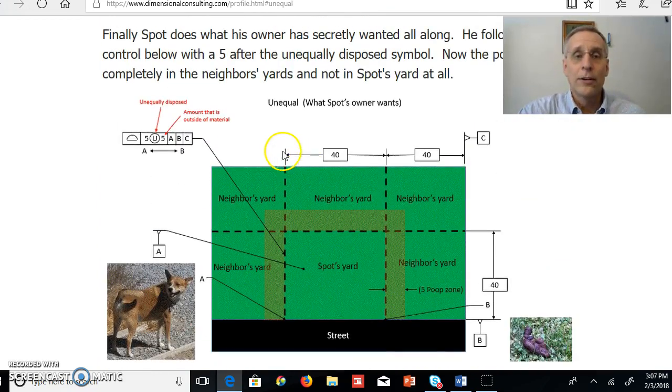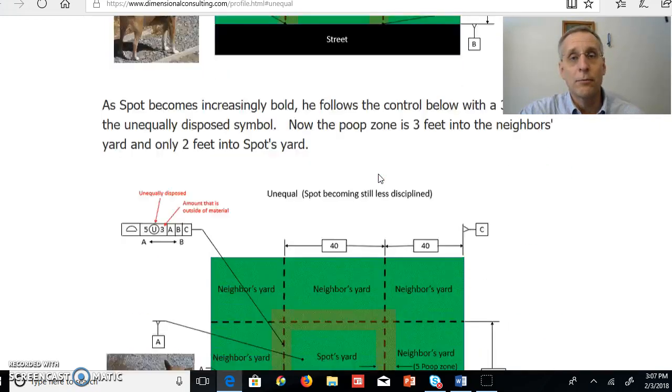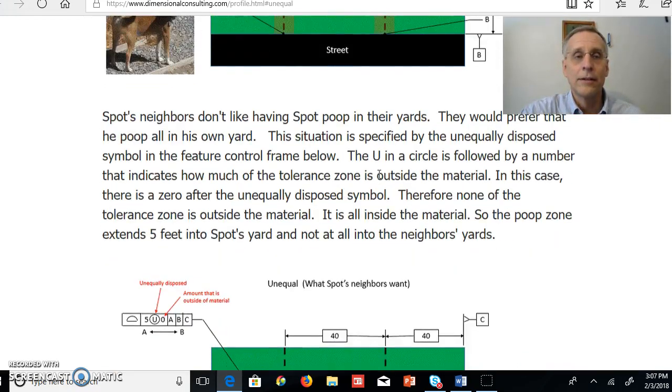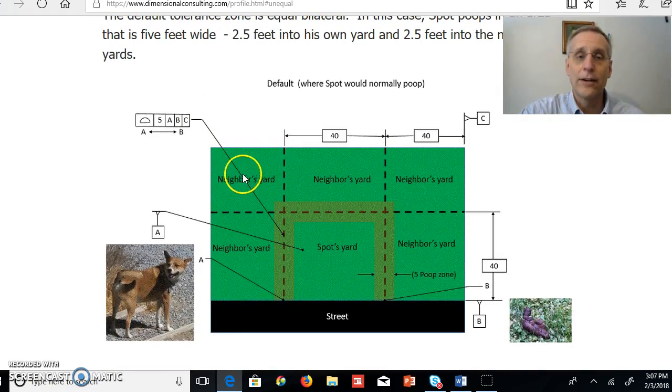So that's our explanation of unequally disposed tolerance zone. By default, profile is half inside, half outside.